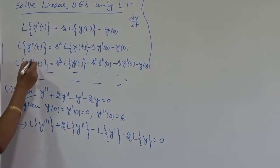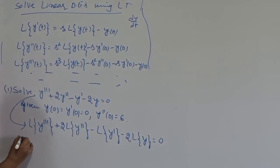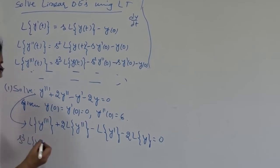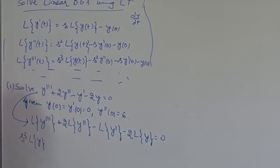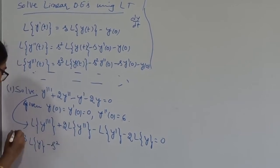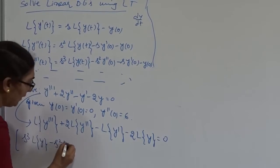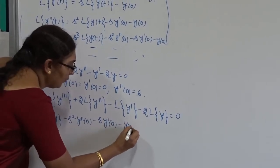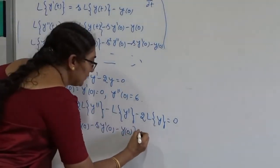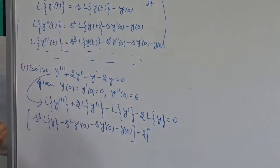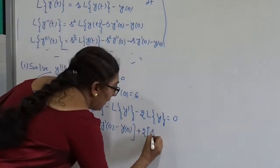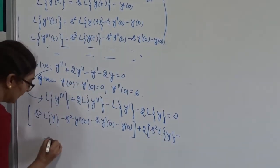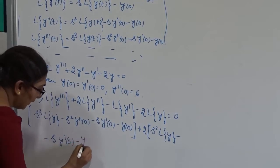Now, from the formula, the Laplace transform of Y double dash is S cubed times the Laplace transform of Y. Keep in mind, Y is a function of T. This gives: S squared times Laplace transform of Y, minus S squared times Y double dash of 0, minus S times Y dash of 0, minus Y of 0. And then S plus 2 times the quantity: S squared times Laplace transform of Y, minus S times Y dash of 0, minus Y of 0.